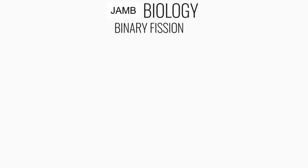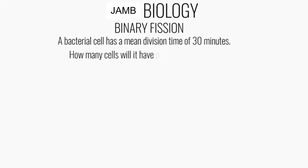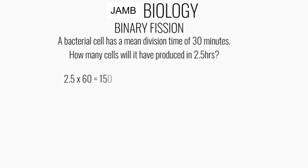Let's go ahead and practice some biology revision questions. A bacterial cell has a mean division time of 30 minutes — how many cells will be produced in 2.5 hours? First, we need to make sure both times are in the same unit, so we convert 2.5 hours into minutes: 2.5 × 60 = 150 minutes. We then divide this time by the mean division time, which gives us the number of divisions: 150 ÷ 30 = 5 divisions.